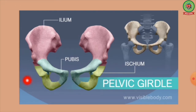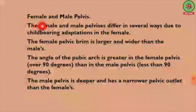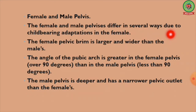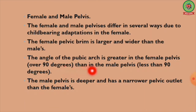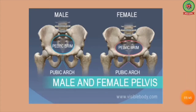The pelvic girdle is a bowl-like structure present in the sacral region of the trunk; it provides articulation to the bones of the legs. The female and male pelvis differ in several ways due to childbearing adaptations. The female pelvic brim is larger and wider. The angle of the pubic arc is greater in the female pelvis (over 90 degrees) than in the male pelvis (less than 90 degrees). The male pelvis is deeper and has a narrower pelvic outlet.